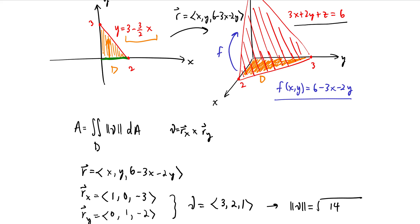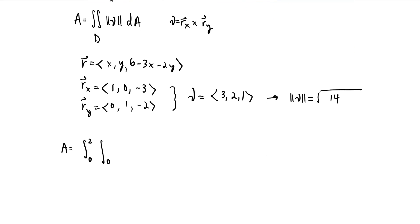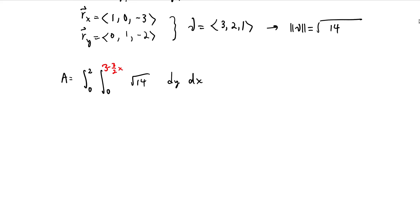And then once that's done, that's where I got the 0 to 2 in the x direction. So it integrates type 1 up and down first and then left to right. So that function was 3 minus 3 halves x up here in this boundary. And then our normal vector, length of our normal vector is constant, and we integrate dy dx.